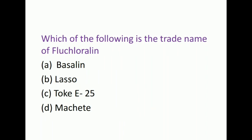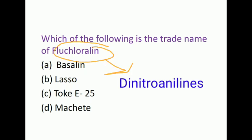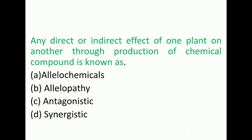The next question is: Which of the following is the trade name of fluchloralin? The options are Basalin, Lasso, Toke E-25, Machete. The right answer is Basalin. Fluchloralin belongs to the group dinitroanilines and it is applied as pre-plant incorporation.